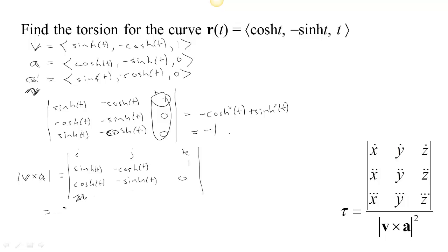Okay, so now what's my i component? Well, 0 minus -sinh, so that's equal to sinh. And my j component would be 0 minus cosh, so that's cosh. And my k component is going to be -sinh², minus -cosh². So we get -sinh² + cosh².